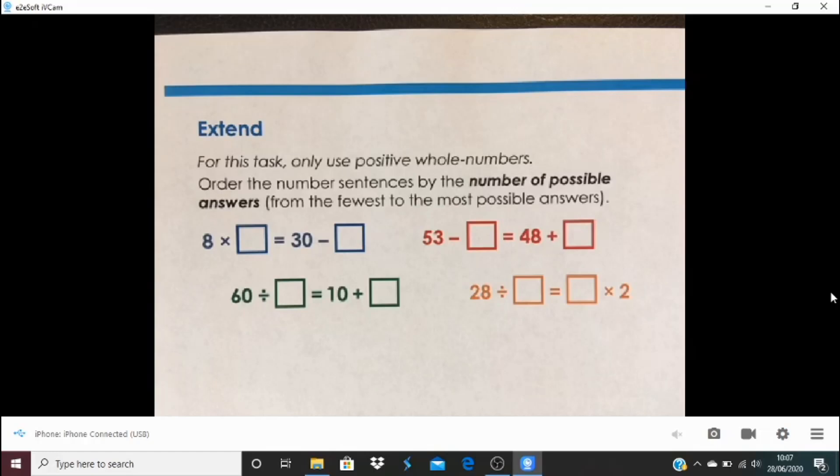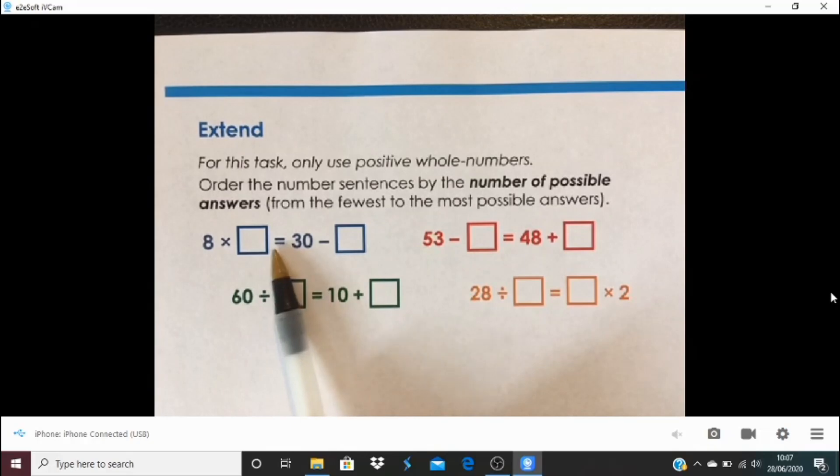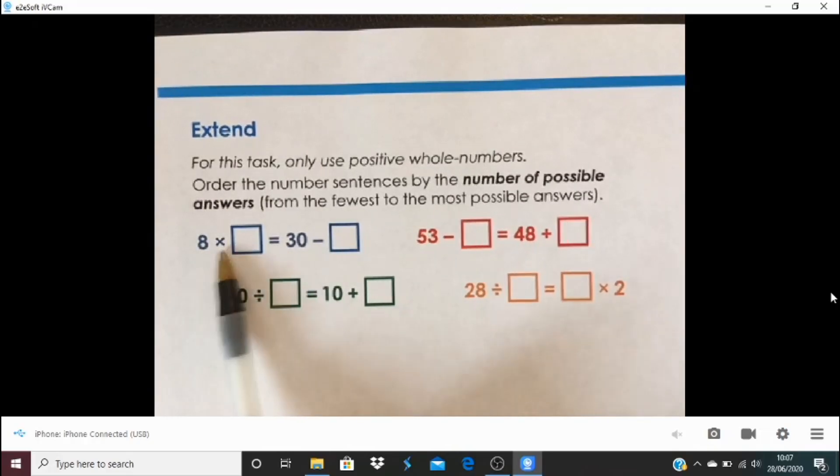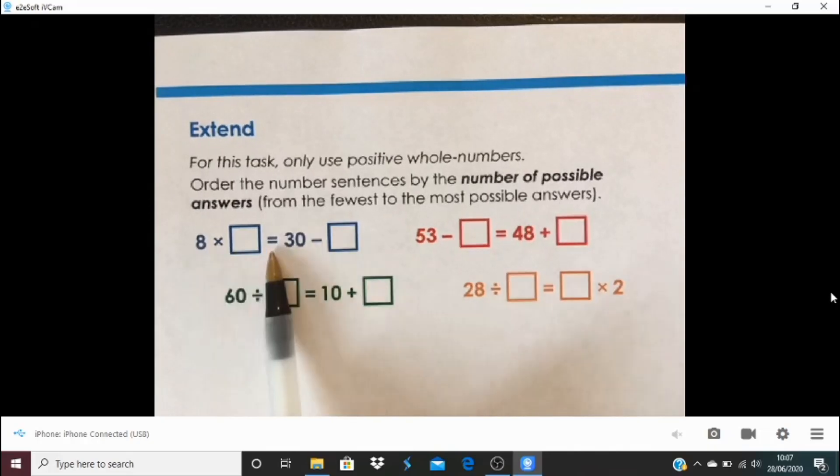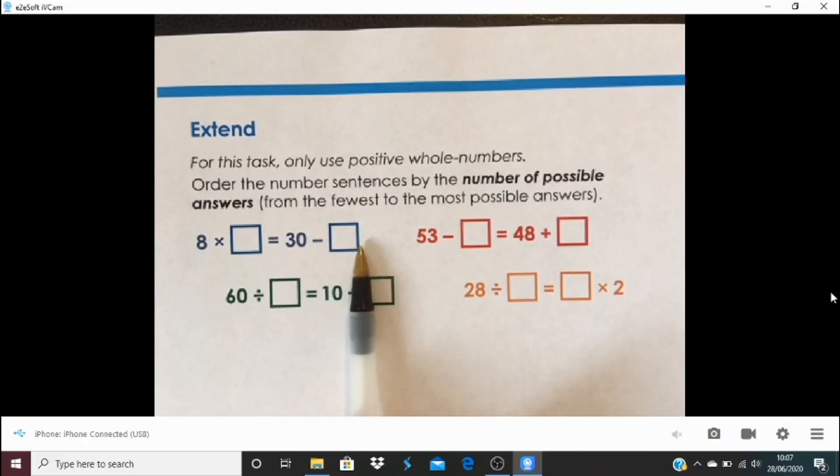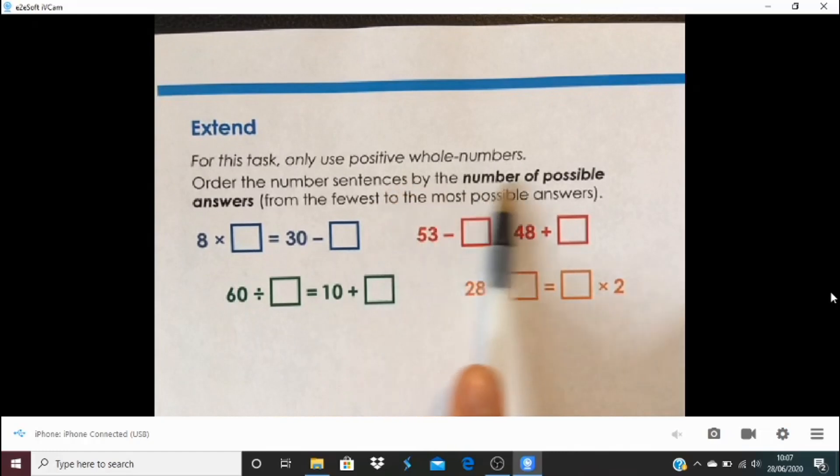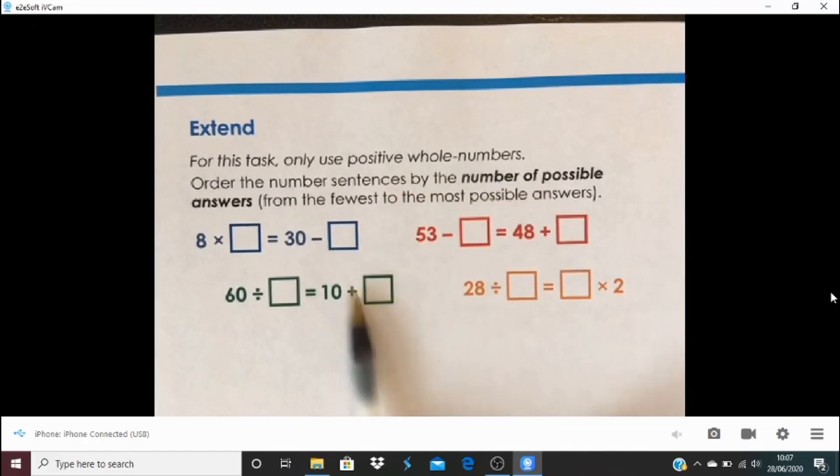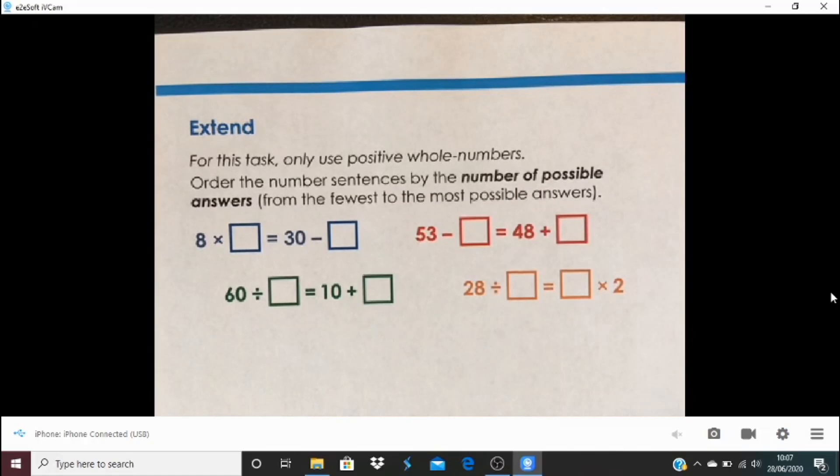We'll kick off with looking at yesterday's work. So we start with yesterday's extend task. Yesterday we were looking at this idea that the equal sign essentially means I have the same amount on here as I have on this side. It's about a balance between the two sides. And on this task, we were asked for the number of possible answers. So of these questions, which have the fewest to the most different possible answers?